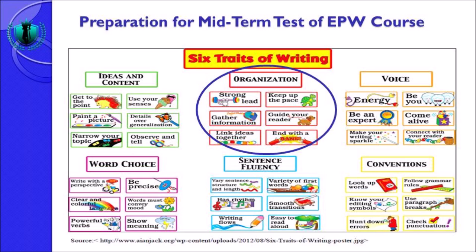Transition signals bisa kita lihat di dalam buku writing 1 di bagian index khusus transition signals. Yang terakhir, end with a bang — concluding sentence di dalam paragraf anda ditutup dengan kalimat yang sangat meyakinkan sehingga setelah membaca paragraf anda, paragraf anda akan menjadi menarik, valid, serta menarik. Those 6 things are related to organization as the second trait of writing.